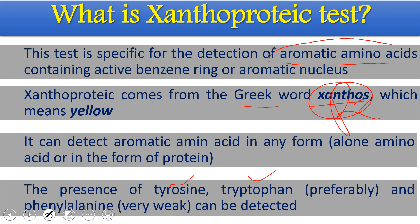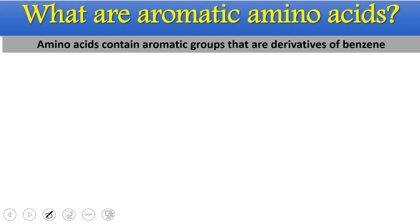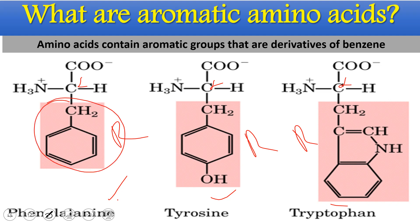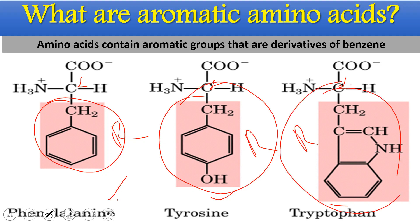Aromatic amino acids are those that contain an aromatic group as their R group — a derivative of benzene. The three aromatic amino acids are phenylalanine, tyrosine, and tryptophan. Each has an alpha carbon bearing an NH2 group, and their R groups are aromatic benzene derivatives: phenylalanine has a plain benzene ring, tyrosine has a hydroxylated benzene ring, and tryptophan has an indole ring system.